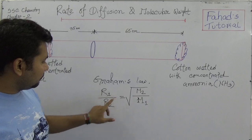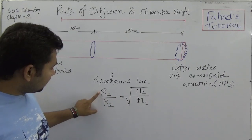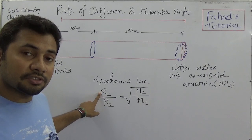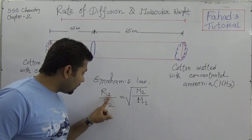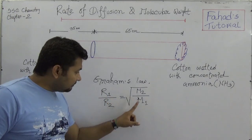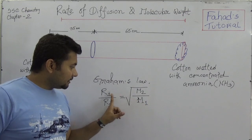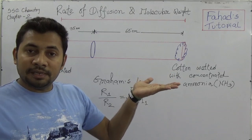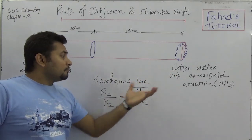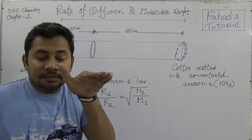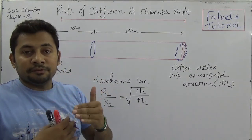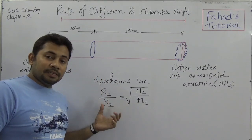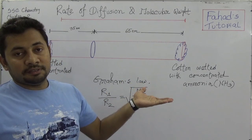This equation explains that the rate of diffusion or effusion of gas 1 is inversely proportional to its molecular weight. It means the greater the molecular weight, the lower the rate of diffusion. And the lesser the molecular weight, the higher the rate of diffusion or effusion.